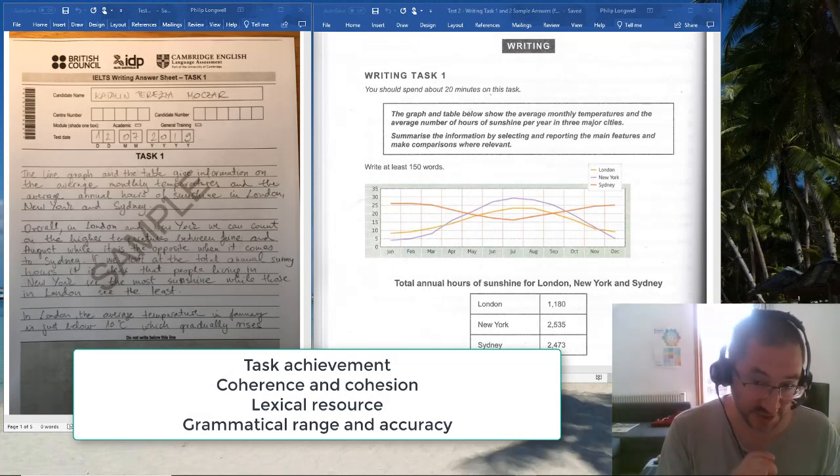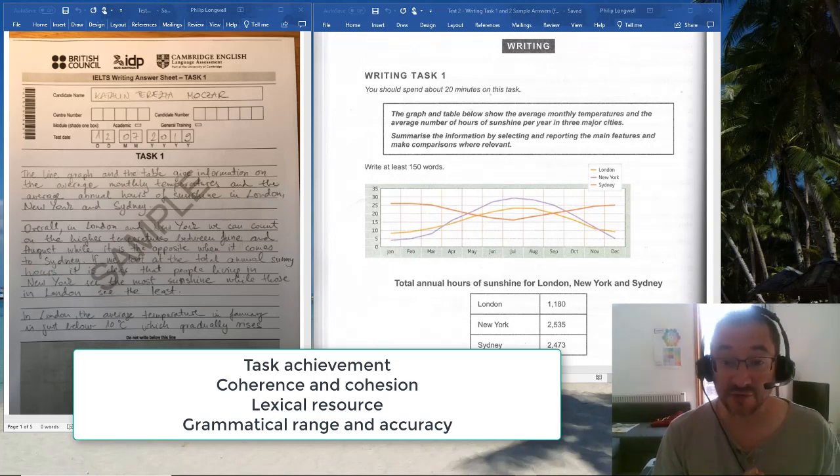The first criteria is task achievement, then you have coherence and cohesion, then lexical resources, your use of vocabulary, and grammatical range and accuracy.